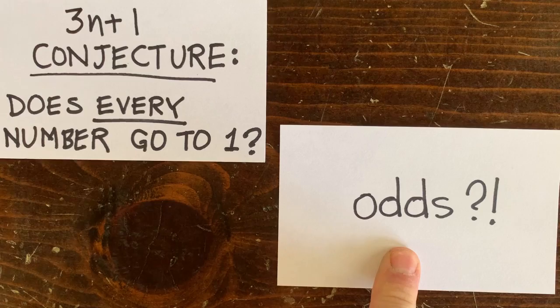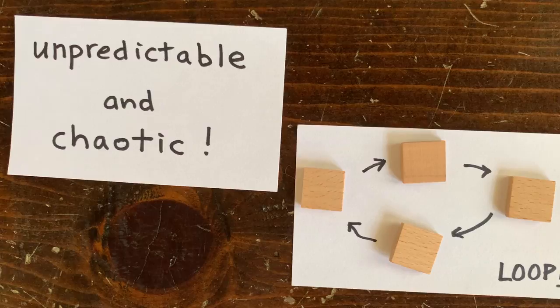And in a later episode, we're actually going to bizarrely calculate those odds exactly. But even with the odds, maybe there is a loop out there. Maybe we get lucky because contrary to popular belief, math is unpredictable and chaotic.